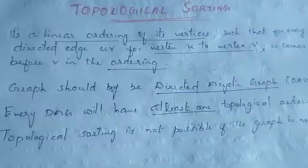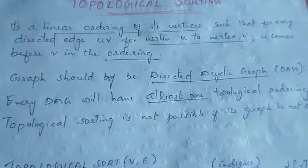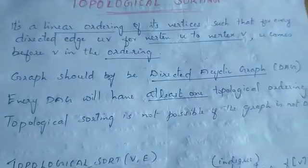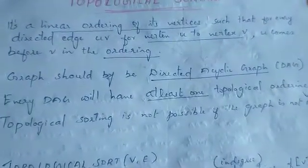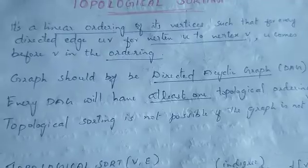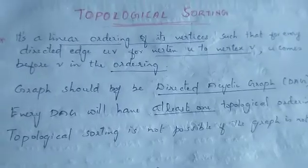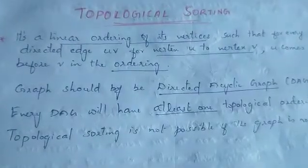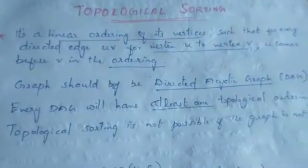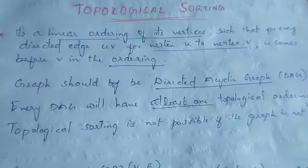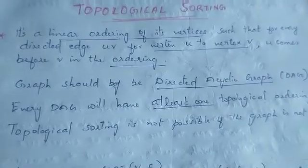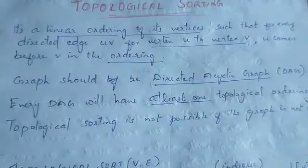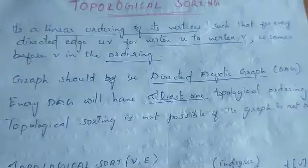We have vertex u and vertex v. We are going to apply topological sorting to a Directed Acyclic Graph, that is, a DAG.